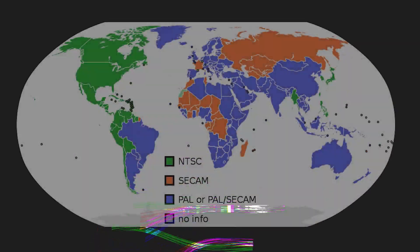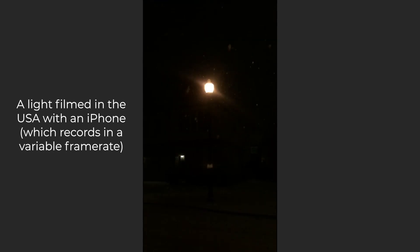25 frames per second may not seem that much different than 24, but it's used in most countries outside of the Americas as it is the standard for PAL, or Phase Alternating Line format. This is a format for TV color encoding, and it asks specifically for 25 fps. In this case, 25 is half of 50, which is in reference to PAL's 50 interlaced fields per second standard. If you're in Europe, for example, and film at 60 fps, you might notice flickering lights in your footage.